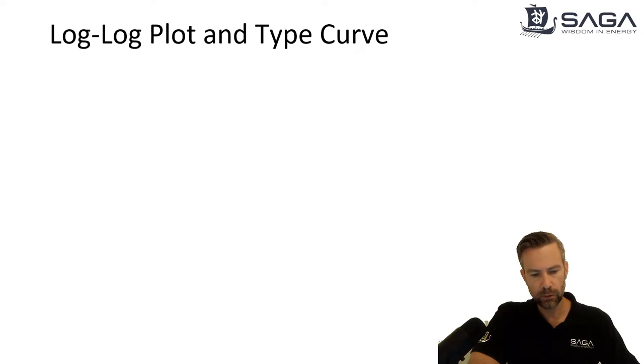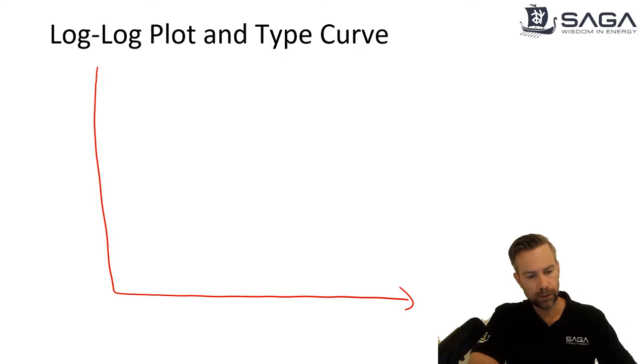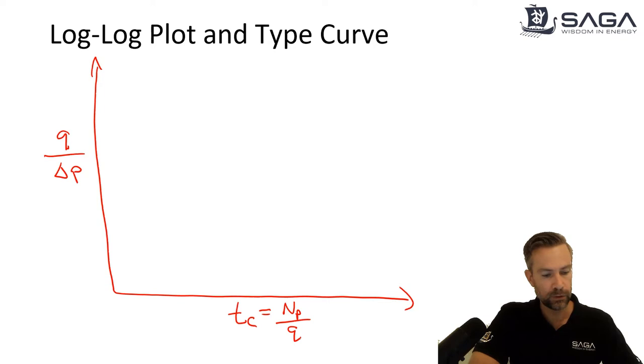Okay, so the log-log plot and the type curve, I'm going to do this all with whiteboarding, not going to use any software examples, just to sort of illustrate the concept. The log-log plot is really the bread and butter of well-performance engineering. We'll see this plot used all the time in production analysis and rate transient analysis. So what we're going to do is Q over delta P, and the delta P is PI minus PWF. So it's the flowing pressure drop. And then on the x-axis, we plot TC, which is material balance time. Material balance time, if we're looking at oil, is going to be cumulative oil divided by rate. This is very easy to do, like I said, in just an Excel.